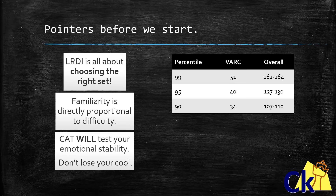There is a rule of thumb: familiarity is directly proportional to difficulty. If we are familiar with cubes, Venn diagrams, and arrangements because of the fact that we practice them so much in mocks, then you can assume that in the actual CAT paper you might get a very difficult question from these topics.